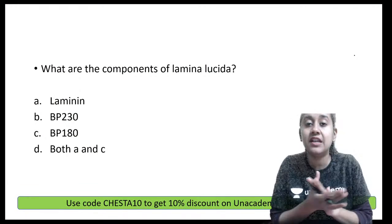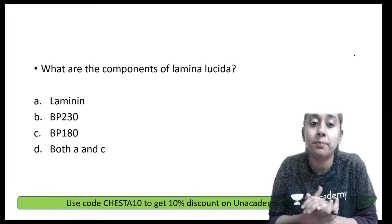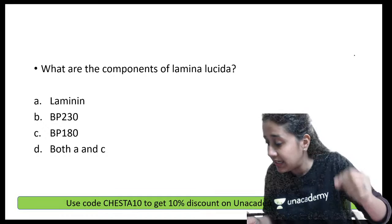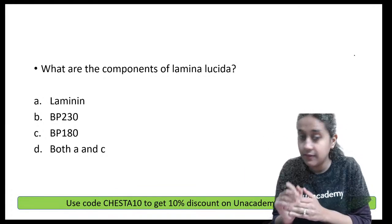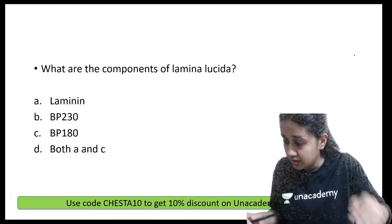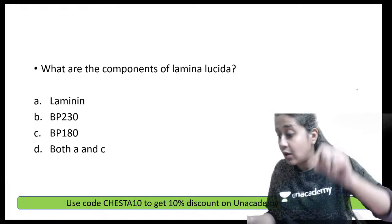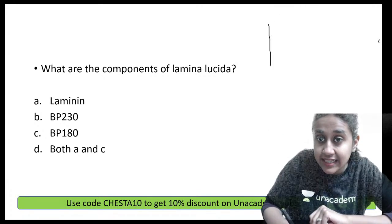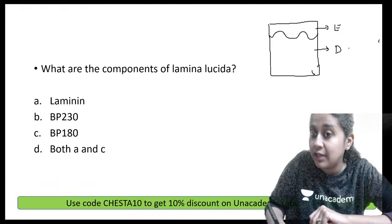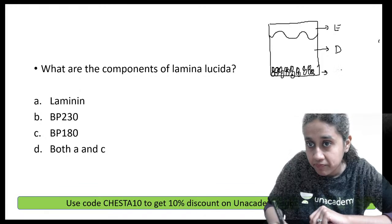The first question for today's session on basement membrane: What are the components of Lamina Lucida? Options are Laminin, BP230, BP180, or both A and C. Before answering, you should know how normal skin looks. Skin is made up of three components: epidermis on top, dermis just below the epidermis, and the fat cell layer — the hypodermis or subcutis — below the dermis.